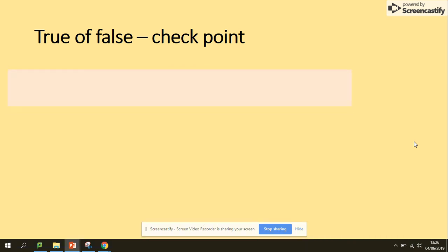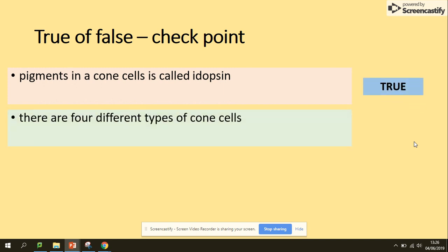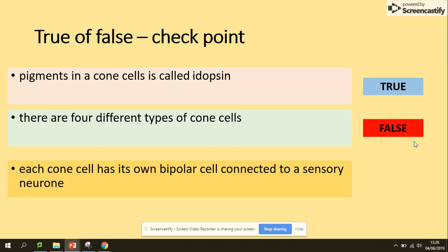Another checkpoint. Pigments in cone cells: it's called rhodopsin. Correct. There are four different types of cone cells. That's false. There are three. Each cone cell has its own bipolar cell connected to a sensory neuron. That's correct. And cone cells respond to high light intensity, which is correct.